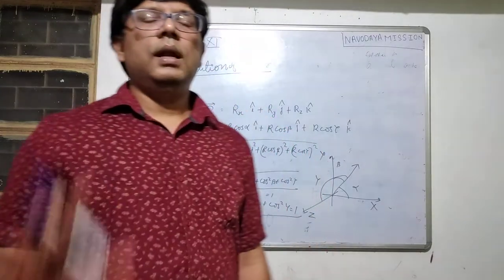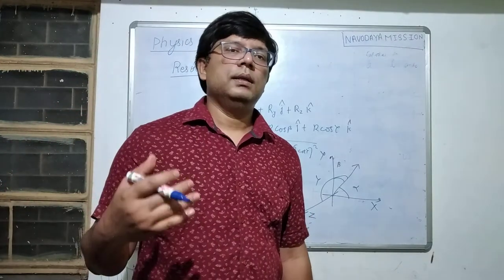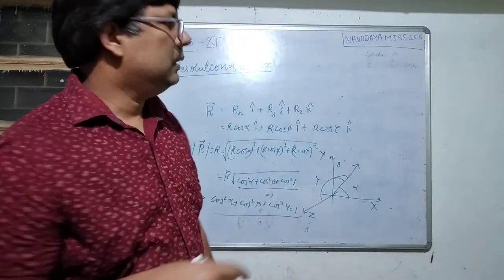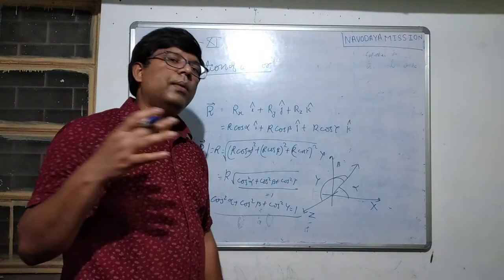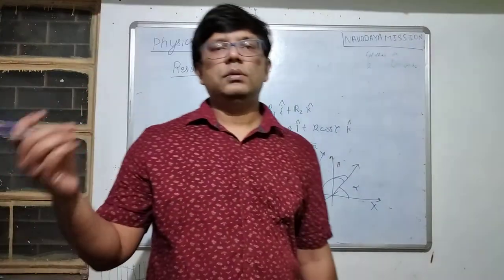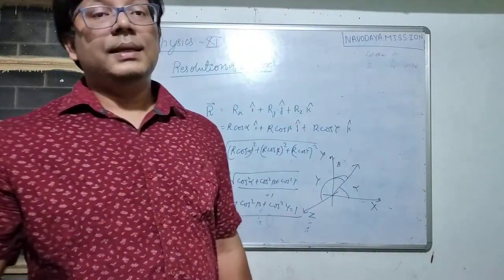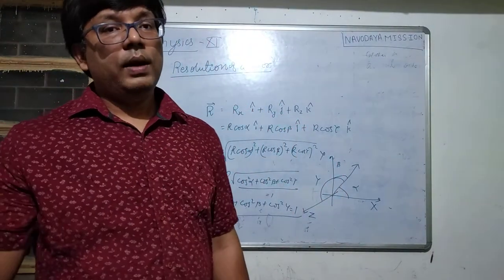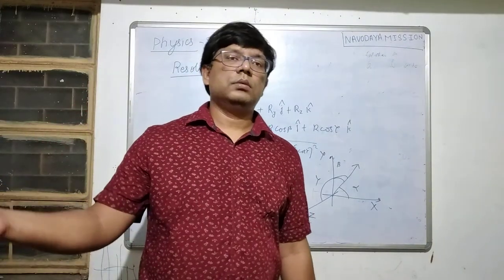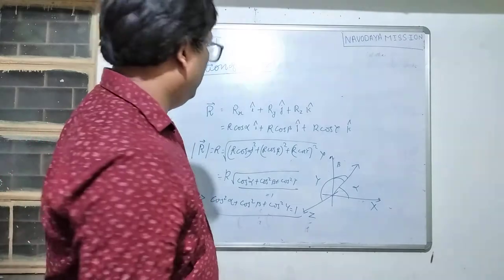In summary, for the resolution of a vector: in two dimensions we get cos²α + cos²β = 1, and in three dimensions all three angles alpha, beta, and gamma satisfy cos²α + cos²β + cos²γ = 1.